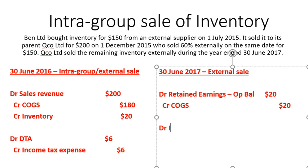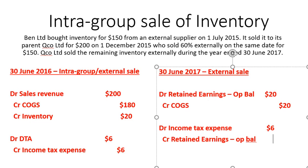Then we record the tax effects: we debit income tax expense by $6 and credit retained earnings opening balance by $6. We increase income tax expense by $6 because we reduced COGS by $20 — reducing expenses by $20 means $20 more profit, so we have to pay tax on that. And we credit retained earnings opening balance because last year we credited income tax expense by $6, which was closed to retained earnings at year end, so to recognise it going forward we credit retained earnings at the opening balance.